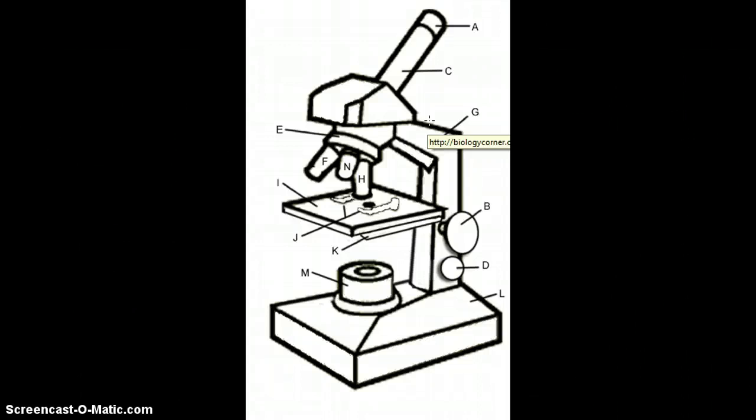You can easily switch objectives by turning the rotating nosepiece. The coarse adjustment knob is larger on your microscope. You will use this primarily to focus on your specimen. Do not use the coarse adjustment knob on high power 40 times as it will crack your slide.